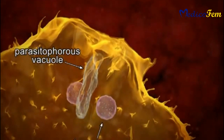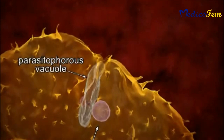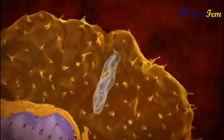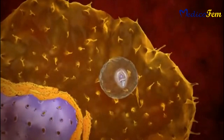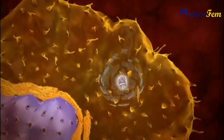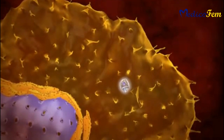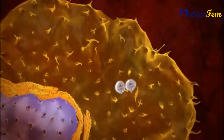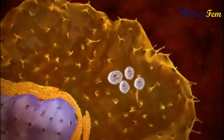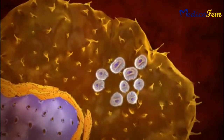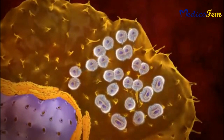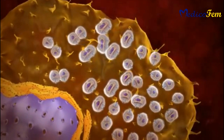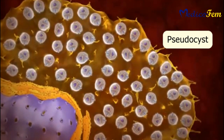Inside the macrophage, there is formation of a parasitophorous vacuole. These parasitophorous vacuoles fuse with lysosomes. Inside the vacuole, it transforms into an amastigote form, followed by rupture of the vacuole and release of amastigotes into the cell cytosol. Amastigotes multiply by binary fission, forming a cyst-like mass of growth known as a pseudocyst. Many amastigotes within the pseudocyst are then transformed into non-multiplying trypomastigote forms.